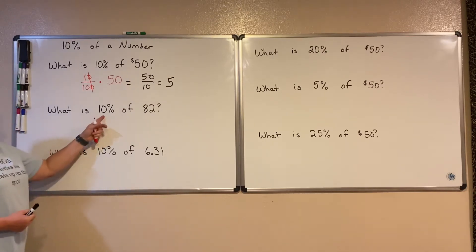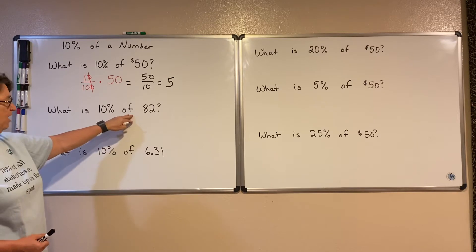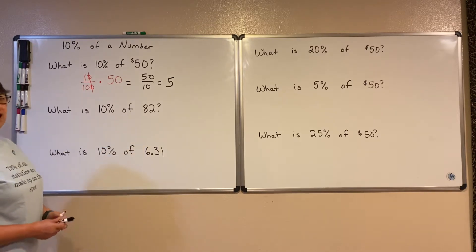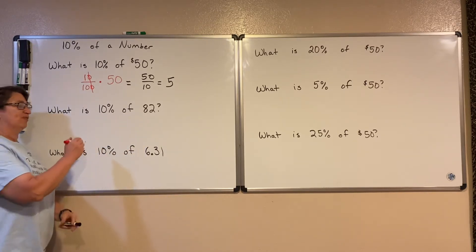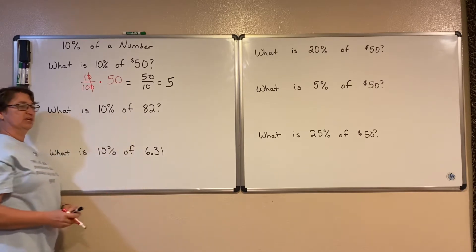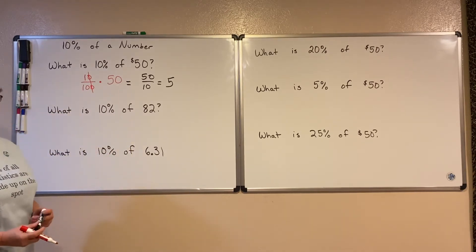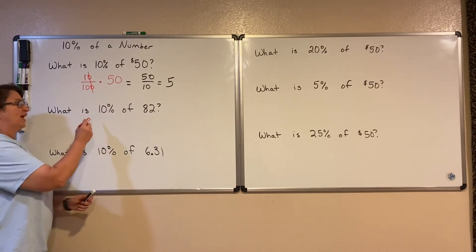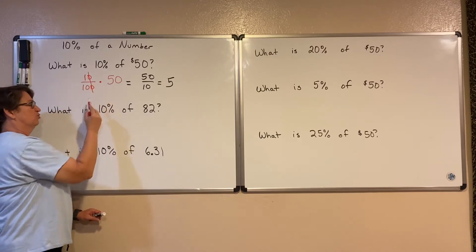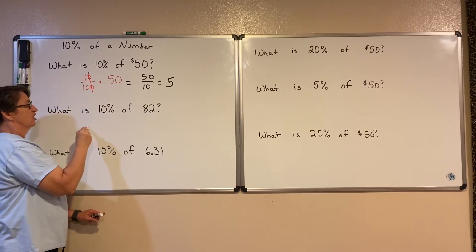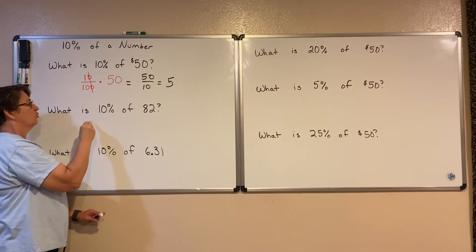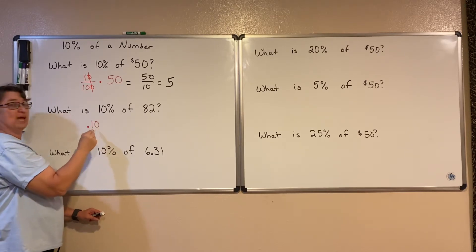I'm going to do the same thing here. I'm going to multiply 10% of 82 or 10% times 82. Instead of multiplying by the fraction version of this 10%, this time I'm going to multiply by the decimal version. Remember that it's 10 hundredths, which I can write as just 0.10.